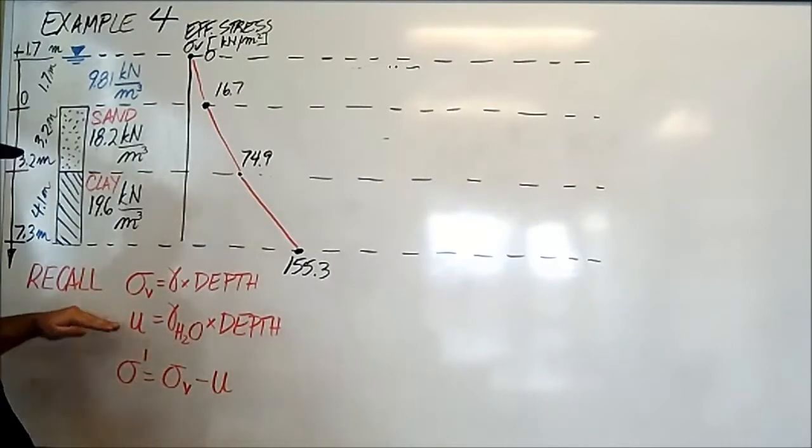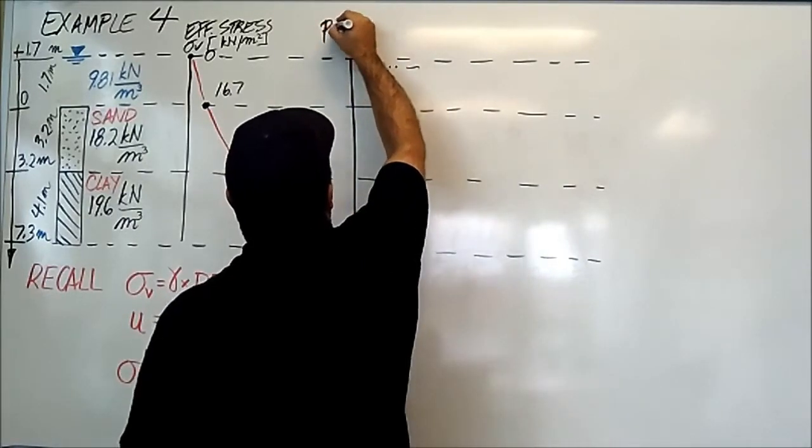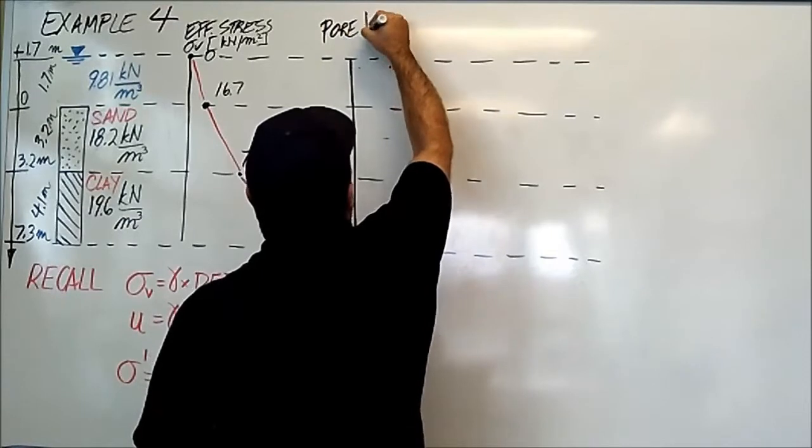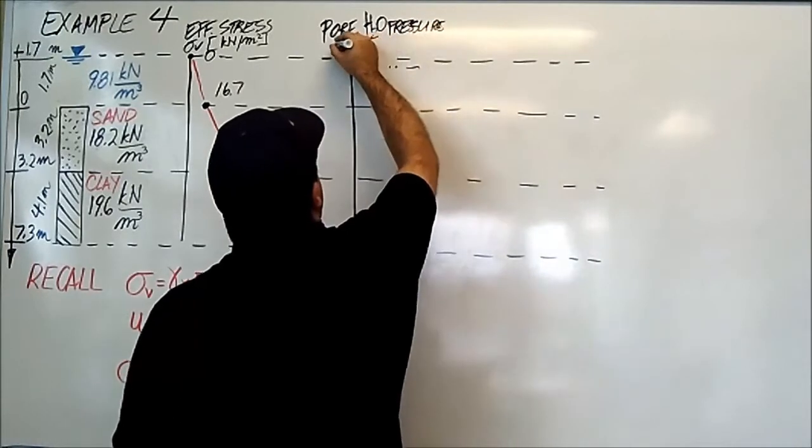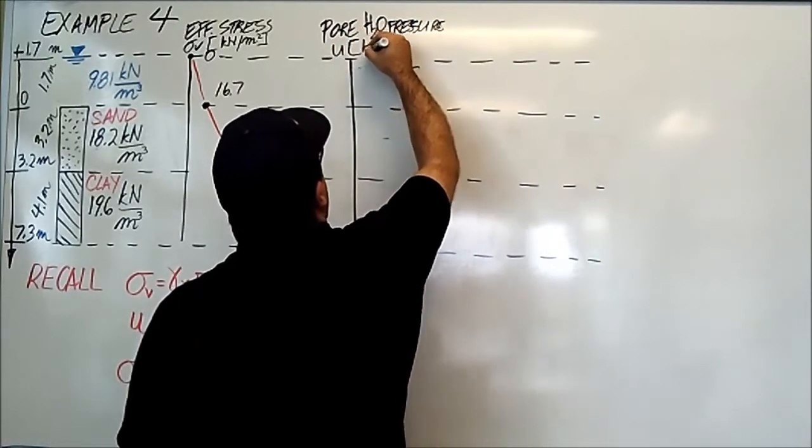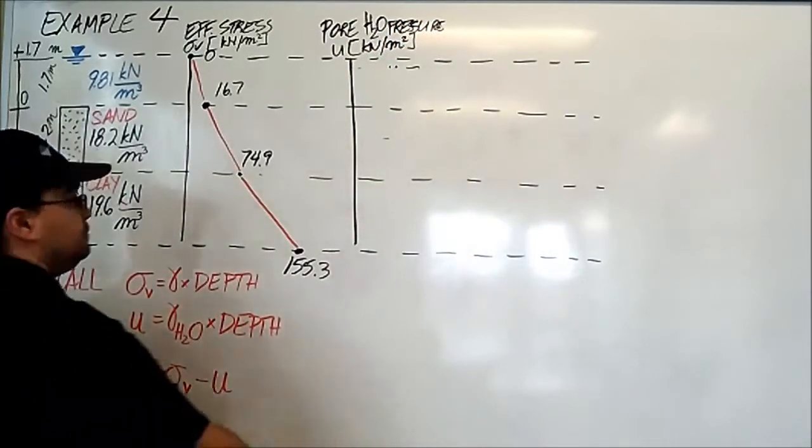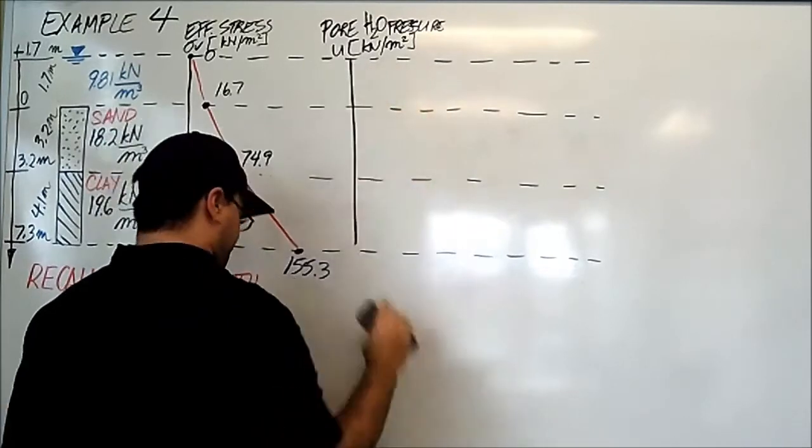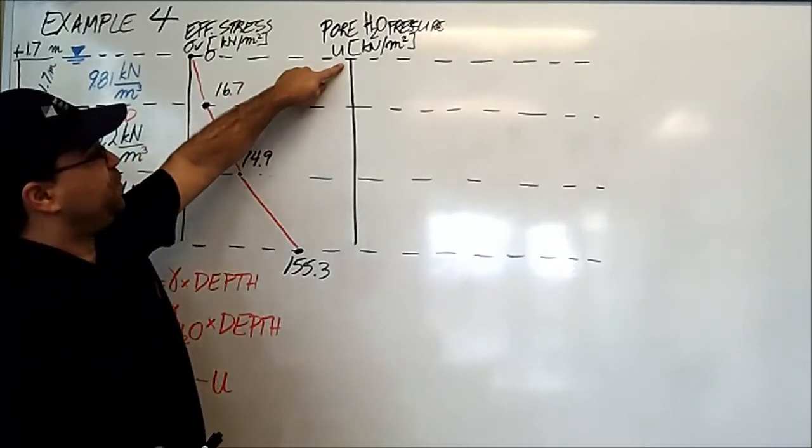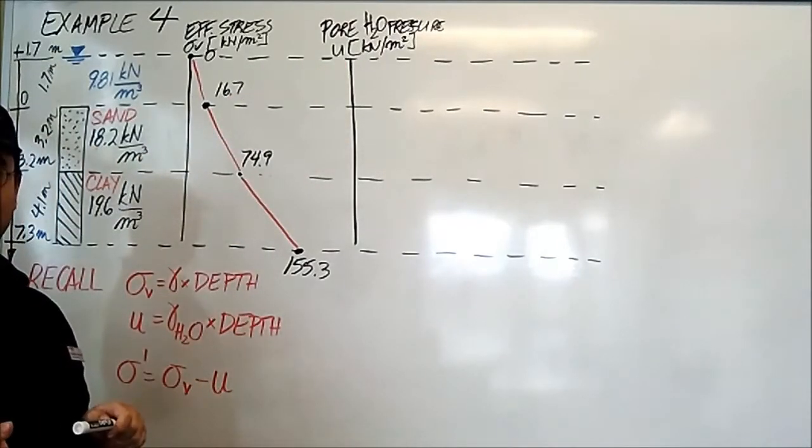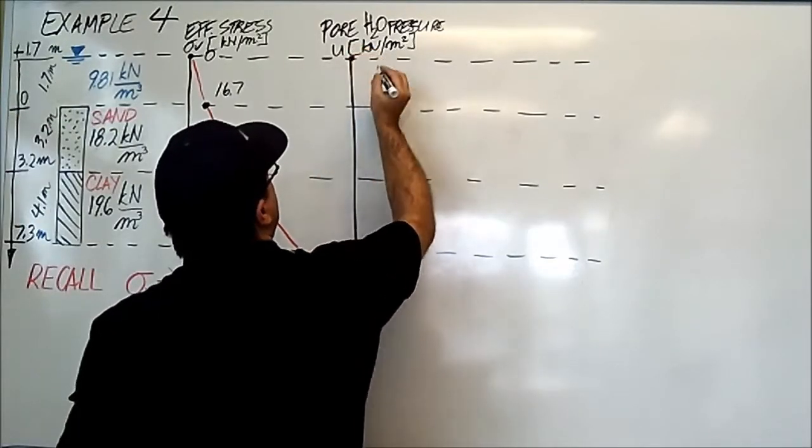Let's move on to the pore water pressure. This is pore water pressure, which is U, and it's in kilonewtons per meter squared. As usual, as we've covered so far, at the very top, zero. Why? Go check out examples one, two, and three.